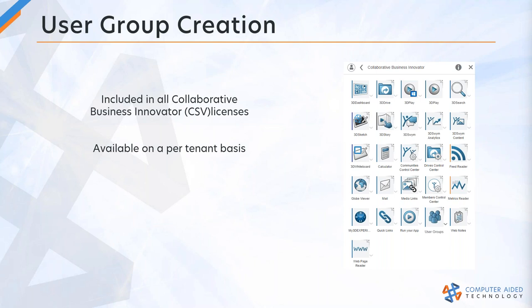One thing to note is that when user groups are set up, if you have multiple tenants, they're on a per-tenant basis — they are specific to the tenant that you're running with. You need to make sure that when you're going to fire up your user group, you're set to the correct tenant moving forward. If Bob and Todd have something to add as we go forward, or if they're watching the chat and something pops up, just let me know.